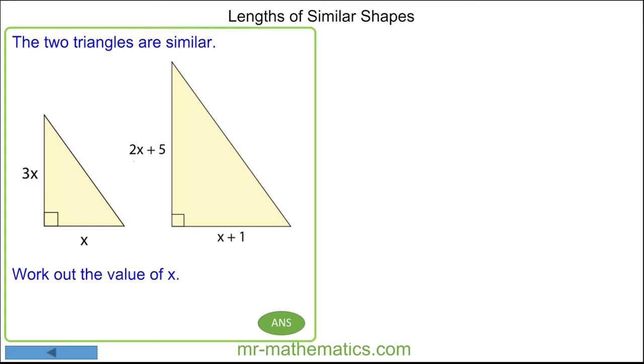This means that 2x plus 5 divided by 3x will be the length scale factor. That is how many times bigger the bigger triangle is than the smaller one. So 2x plus 5 divided by 3x has the same length scale factor as this length divided by this length which is x plus 1 over x.